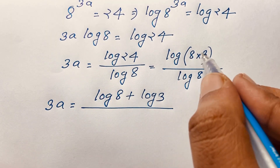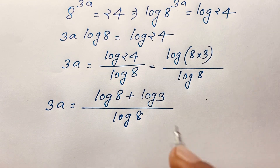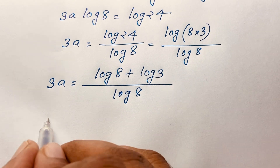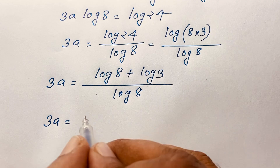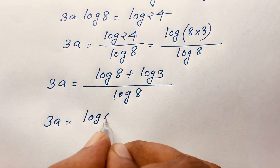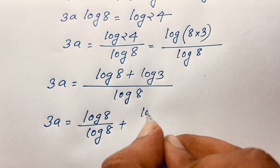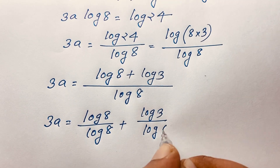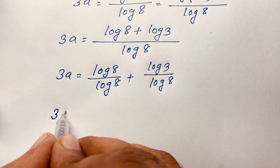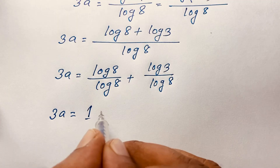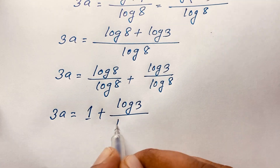You know that log of A times B equals log A plus log B, and here is log 8. Now I can see here is 3A is equal to, if I separate this fraction, it will be log 8 divided by log 8 plus log 3 divided by log 8. So here 3A is equal to 1 plus log 3 over log 8.